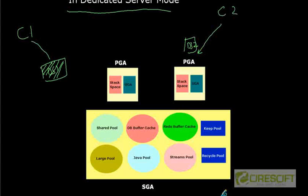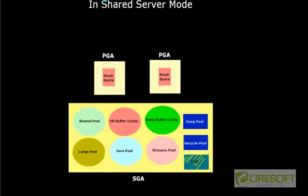The SGA contains different things like shared pool and DB buffer cache, which we will explain in detail in the next couple of videos. However, in shared server mode, the UGA instead of lying in the PGA becomes part of the SGA. Because in shared server mode, information like the request queue and response queue is shared across different clients, so the UGA memory is reported as part of the SGA.